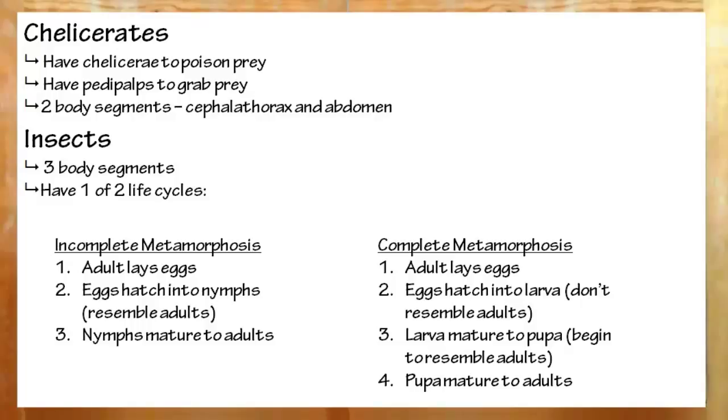Insects. The most diverse group of arthropods. Three body segments. Two legs per segment. Know that they're very diverse. And also know the main life cycles. Incomplete metamorphosis. Adult lays eggs. Eggs hatch into nymphs. Nymphs are a smaller version of the adult. Then the nymph matures into the adult.